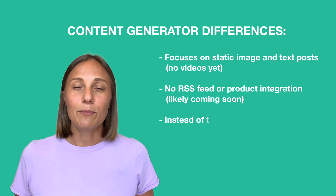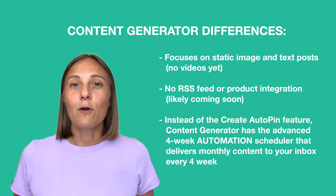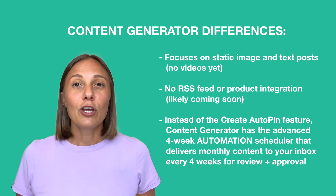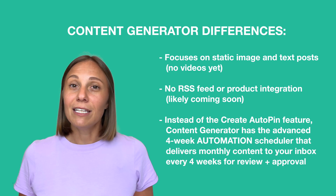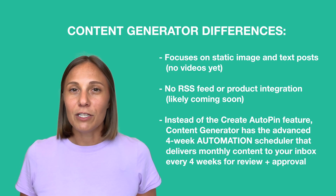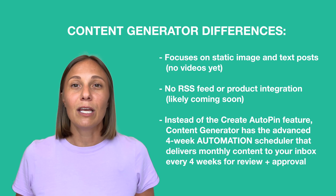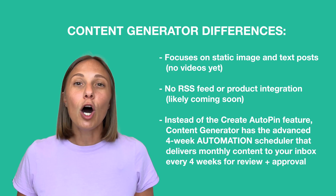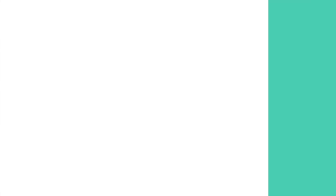There are a few key differences to keep in mind. Currently, Content Generator focuses on static images and text posts, not videos. There's no RSS feed or product integration yet, though those may come later. Instead of the Create Auto Pin feature, Content Generator's strength is creating branded, on-message content automatically every four weeks, so your business stays consistent. It's ideal for small businesses, creators, or agency owners — especially if you've got a blog, an online shop, or run a service-based business where keeping your audience warm matters. This is great for people who create content regularly but need help scaling it, so you can focus on the bigger stuff.